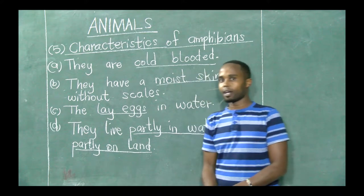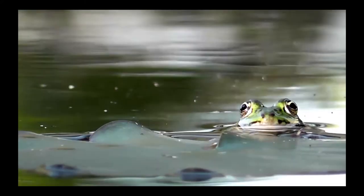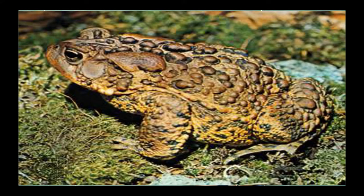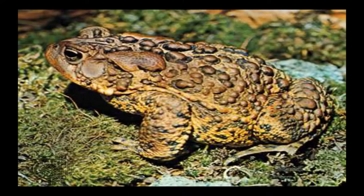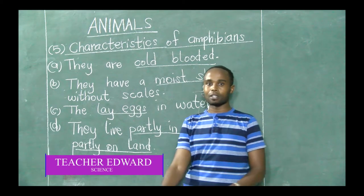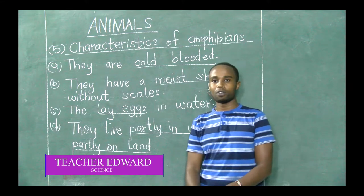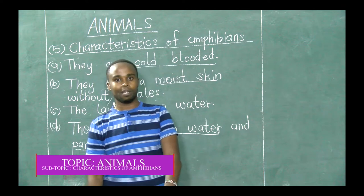Characteristic number four: they live partly in water and partly on land. Sometimes they live in water, and sometimes they live on land. It is very possible to find some of these amphibians in water, and sometimes you find them on land. Those are some of the characteristics of amphibians.